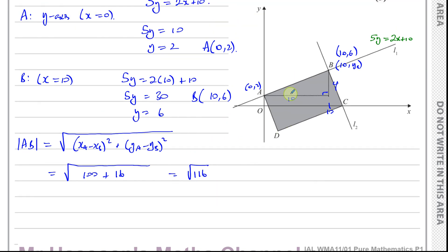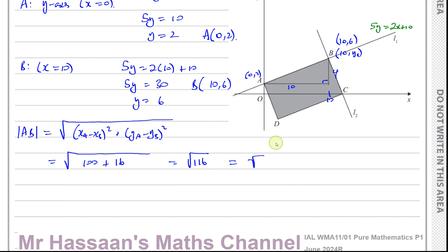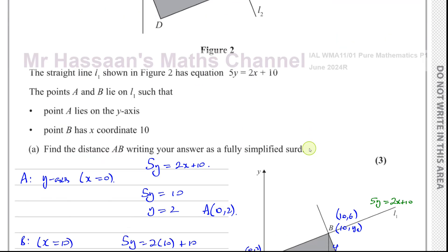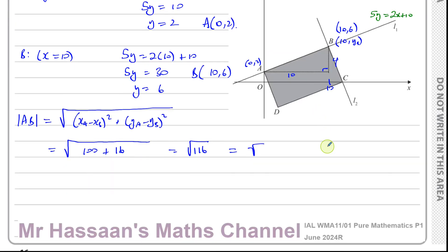We need to give the answer as a fully simplified surd. You could use your calculator, but it's better to show your working. We need to split 116 into a product of two factors where one is a perfect square.